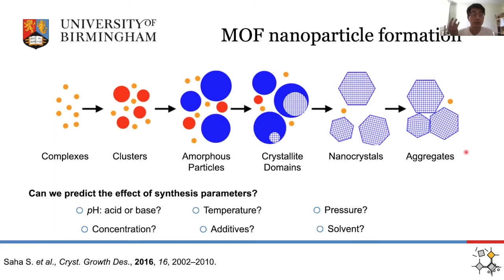We still don't have a good feel for what factors really affect MOF synthesis, and what we'd really like to do is predict what synthesis parameters do to the formation process. If we change the pH, can we promote it? Can we get different phase behavior? Can we do the same with temperature, pressure, or different concentrations? It's often quite a finicky process, and it's hard to predict how even small or large changes will come out in the end.